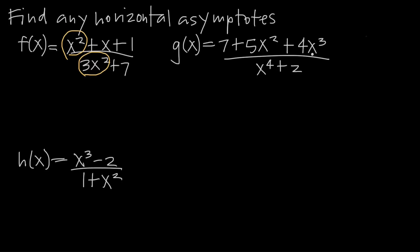For example, in g of x, the highest degree term happens to be the last term in the numerator because of the way the terms are ordered. That's the highest degree term because it's higher than x squared or the constant. x to the 4th is the highest degree term in the denominator. In h of x, the highest degree term in the numerator is x cubed, and in the denominator it's x squared. Make sure you include a negative sign if there is one — we want to grab that negative sign inside the circle, because the sign is sometimes going to be important.